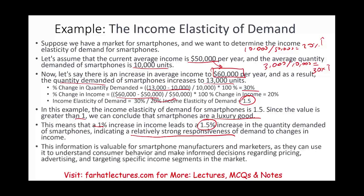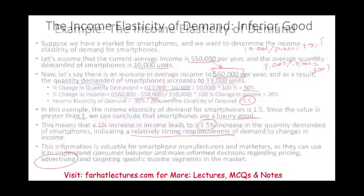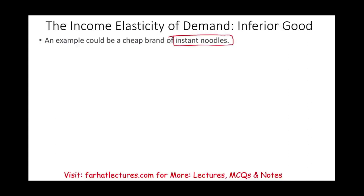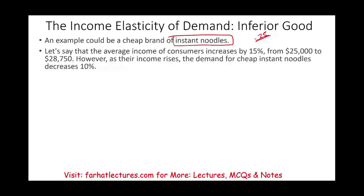How do we use this information? It's valuable for companies that manufacture and market smartphones so they can understand consumer behavior. If they see incomes going up, they might want to increase their advertising. Now let's look at an example of an inferior good — a cheap brand of instant noodles. Let's say the average income of the consumer increased by 15%, from $25,000 to $28,750. However, as their income increases, the demand for cheap instant noodles decreased by 10%.